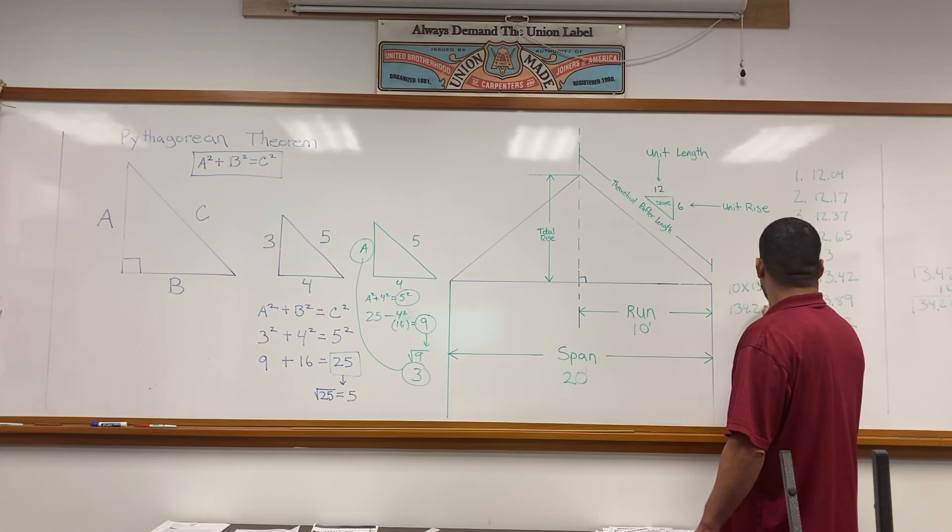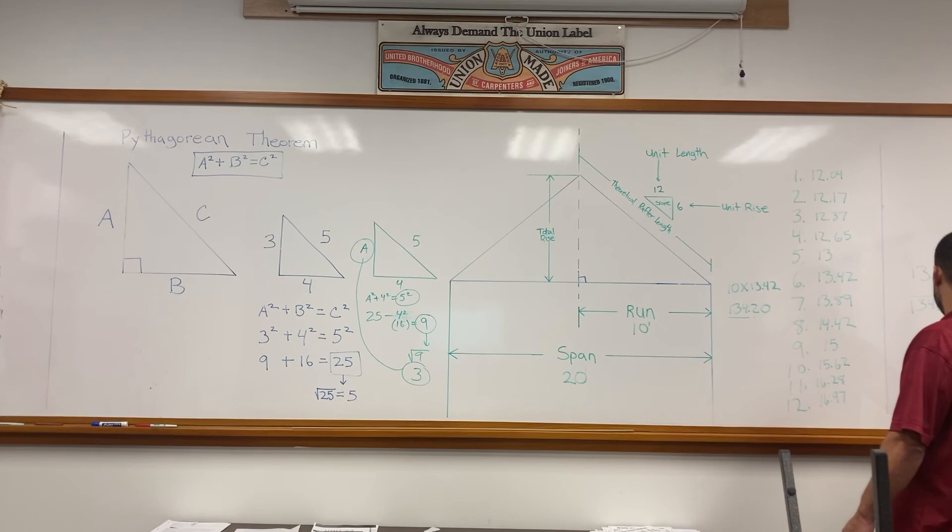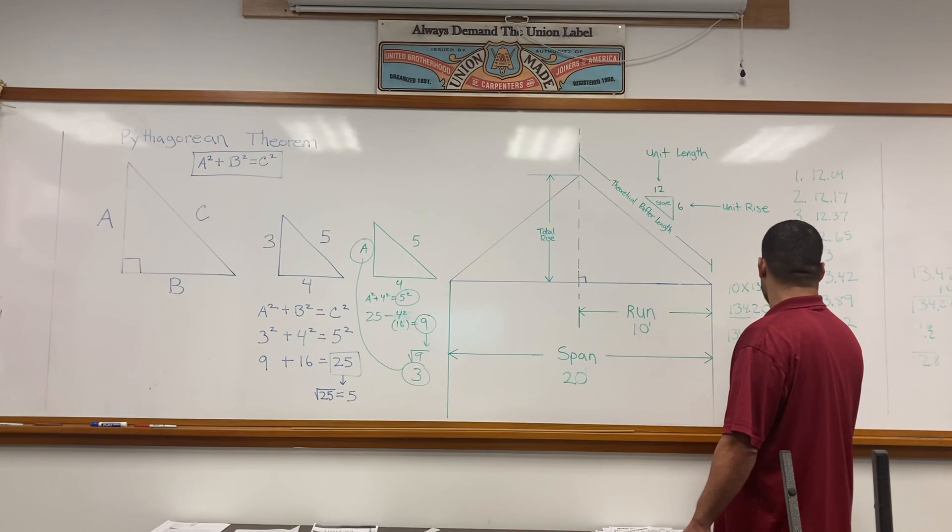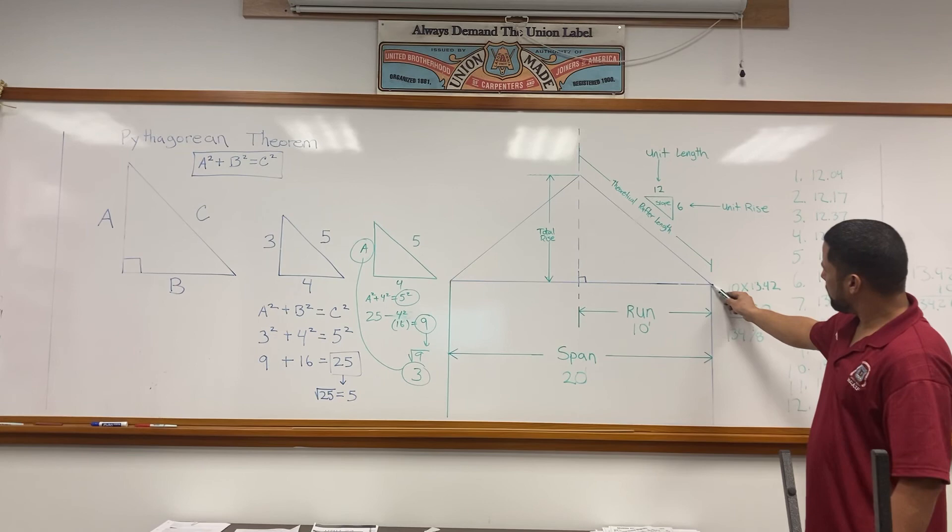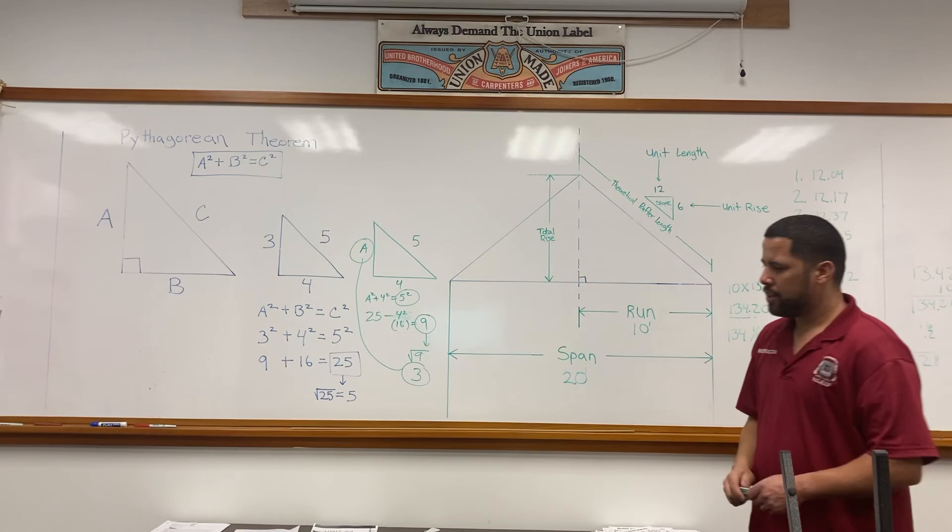134.2. 134 inches, 0.2. 134.3 inches and one-eighth. So it's 134 and one-eighth of an inch. That means this rafter length on 10 feet of run is 134 and one-eighth of an inch.